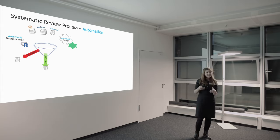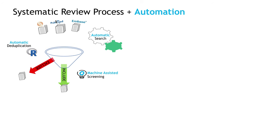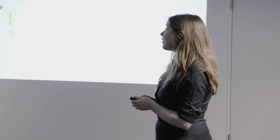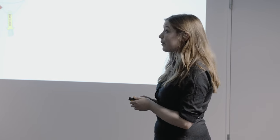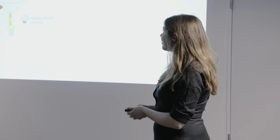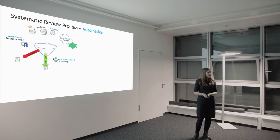The next stage of the systematic review is we need to exclude those studies which are not relevant, and to do this rather than reading thousands of abstracts by ourselves, we can actually train a machine to do this for us once we've done a couple of thousand.